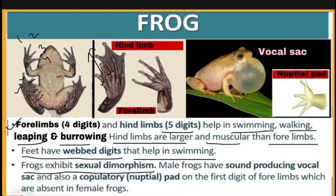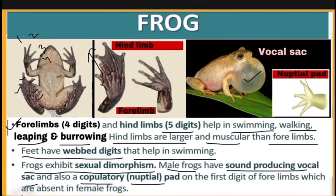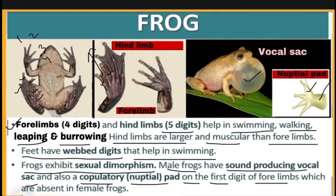Frogs exhibit sexual dimorphism. Male frogs have sound-producing vocal sacs and also have a copulatory or nuptial pad on the first digit of the forelimbs, both of which are absent in female frogs.